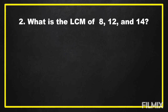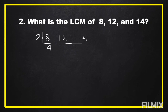Another example: what is the LCM of 8, 12, and 14? We're going to write these numbers in a horizontal line. Eight, 12, and 14 are all divisible by 2, so we divide by 2. Eight divided by 2 equals 4, twelve divided by 2 equals 6, and fourteen divided by 2 equals 7. Is there any common factor between 4, 6, and 7?